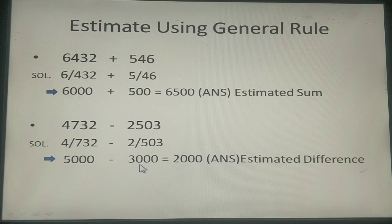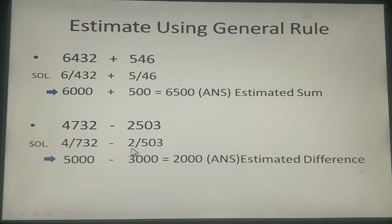Similarly here this is 5. So we know very well that even if it is 5 we are going to add 1 to this number 2. And hence the estimated number that you get here is 3000. Finally the difference of the two numbers after subtraction you will get as 2000. Which is your estimated difference.